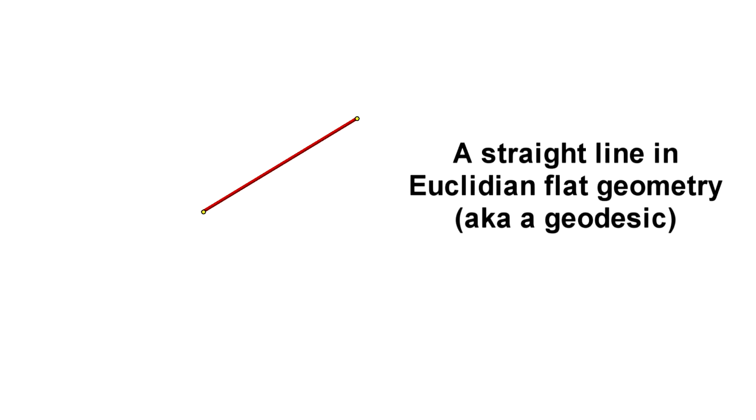In this case, the least curvature is no curvature at all. Another name for the shortest line between two points is the geodesic.